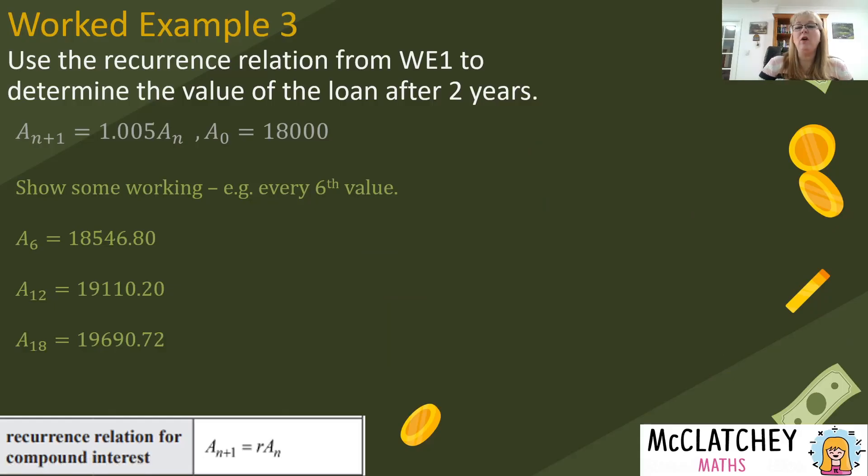Now you might be wondering what kind of working should you show for that? I always think you should write down on your exam paper using the calculator or using the iterative function on the calculator to demonstrate that that's how you've come up with the number. And then I think you should show intermittent values. You wouldn't have to write down all 24, that wouldn't be expected, but show some working. So in this case three or four of the values in between. So you might start with a subscript 6, a subscript 12 and the 18th value.